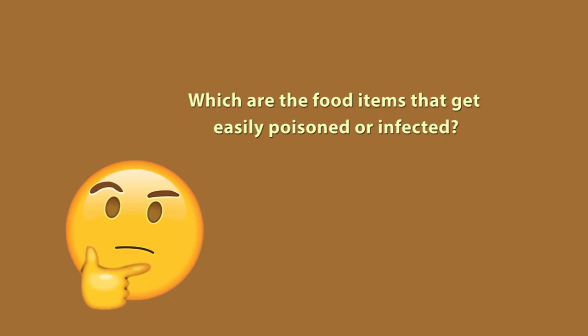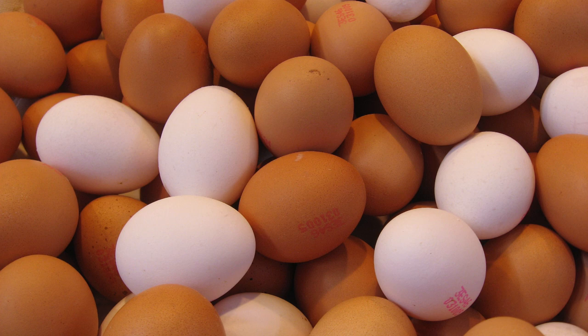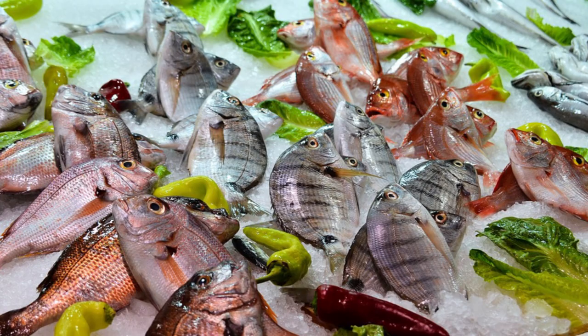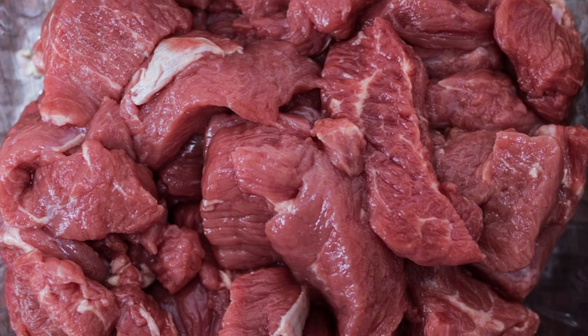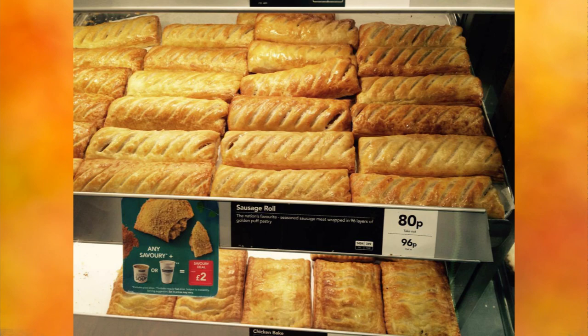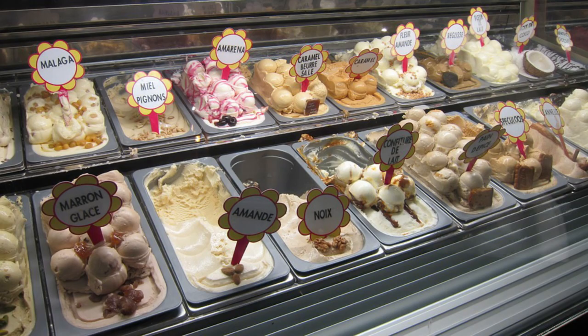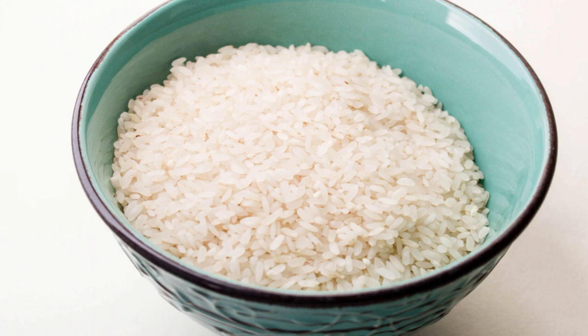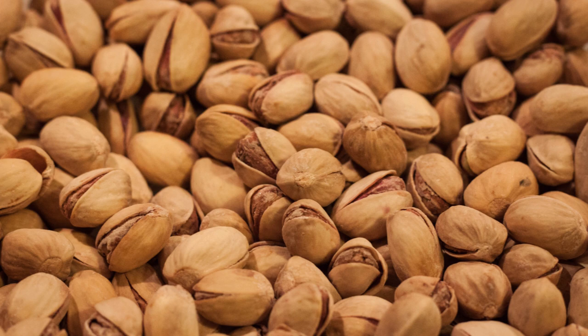Which are the food items that get easily poisoned or infected? Food items most commonly associated with food poisoning include eggs, fish, milk, meat and meat products, dairy products, rice, nuts, etc., as their shelf life is low.